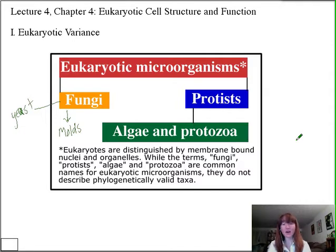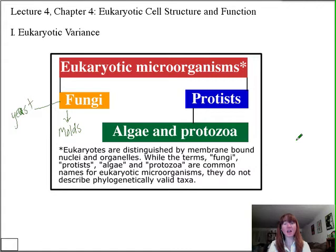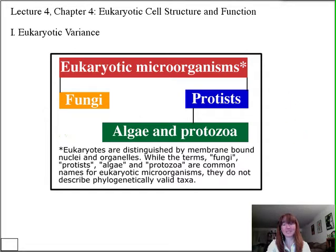Some eukaryotes have a cell wall, such as yeast and diatoms, but not all eukaryotic organisms have a cell wall — in fact, many of them don't. So they have to maintain their structure and cell rigidity in another way. That brings us to an internal structure called the cytoskeleton, and that's the first thing I want to talk about within eukaryotes today.